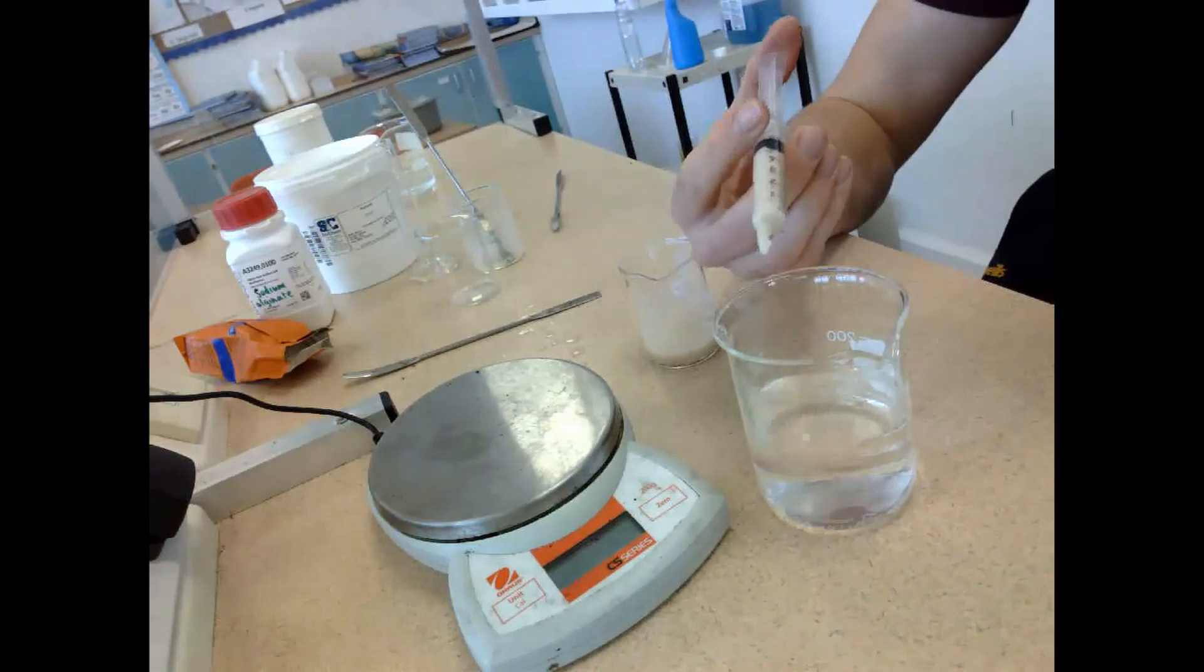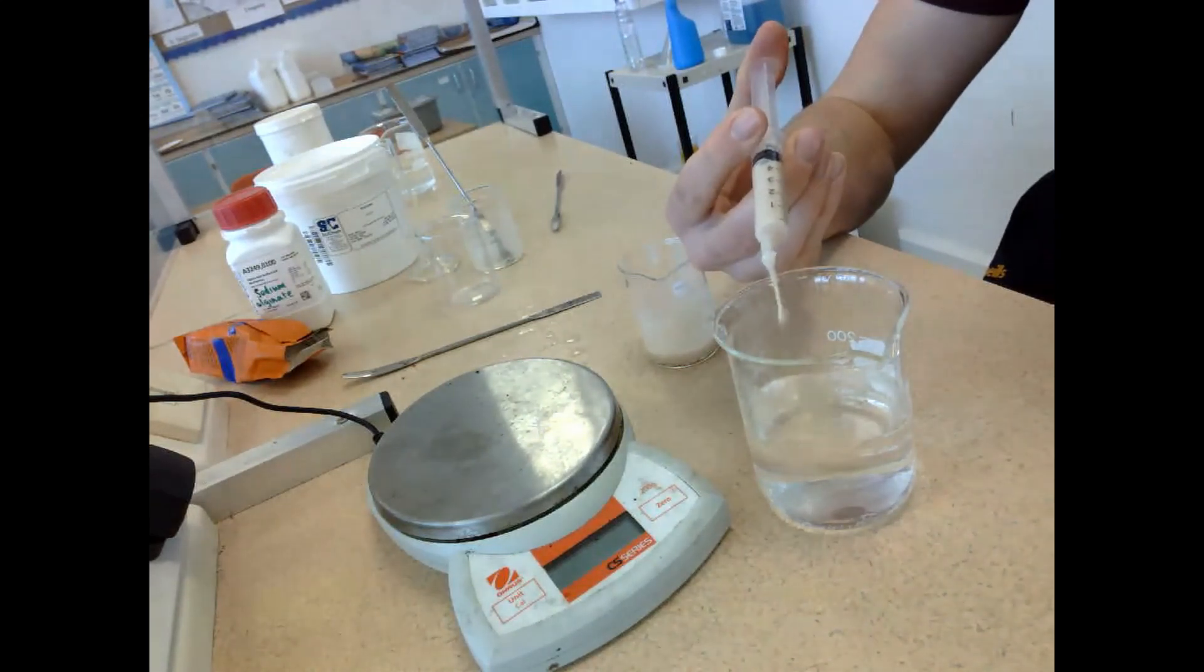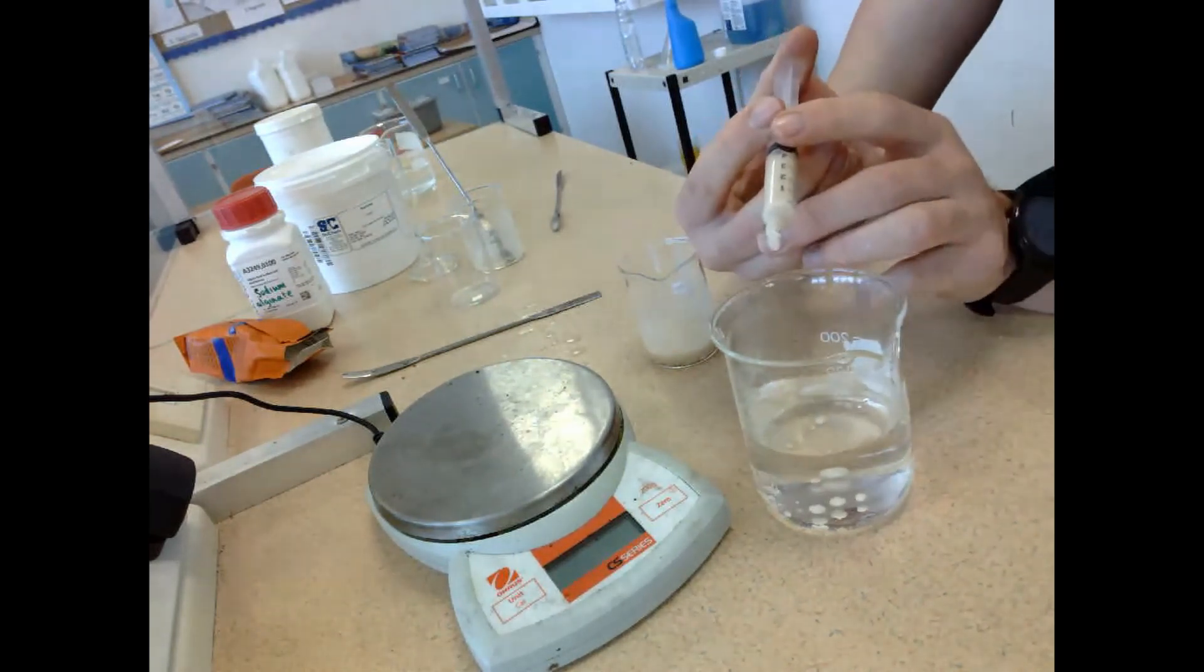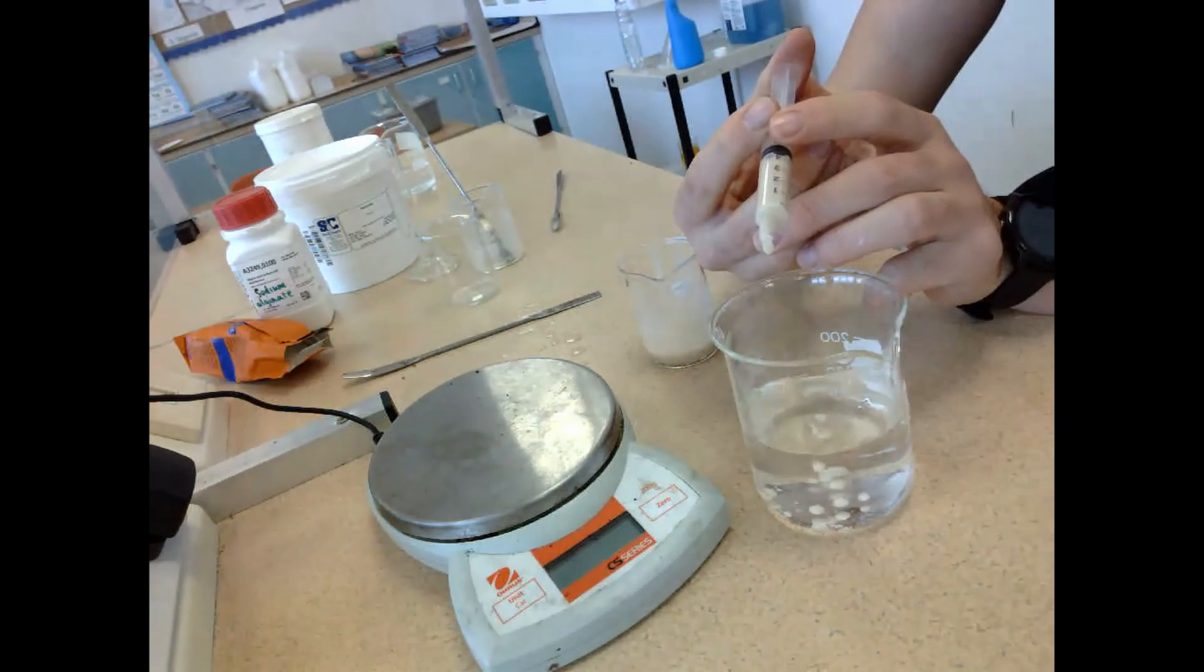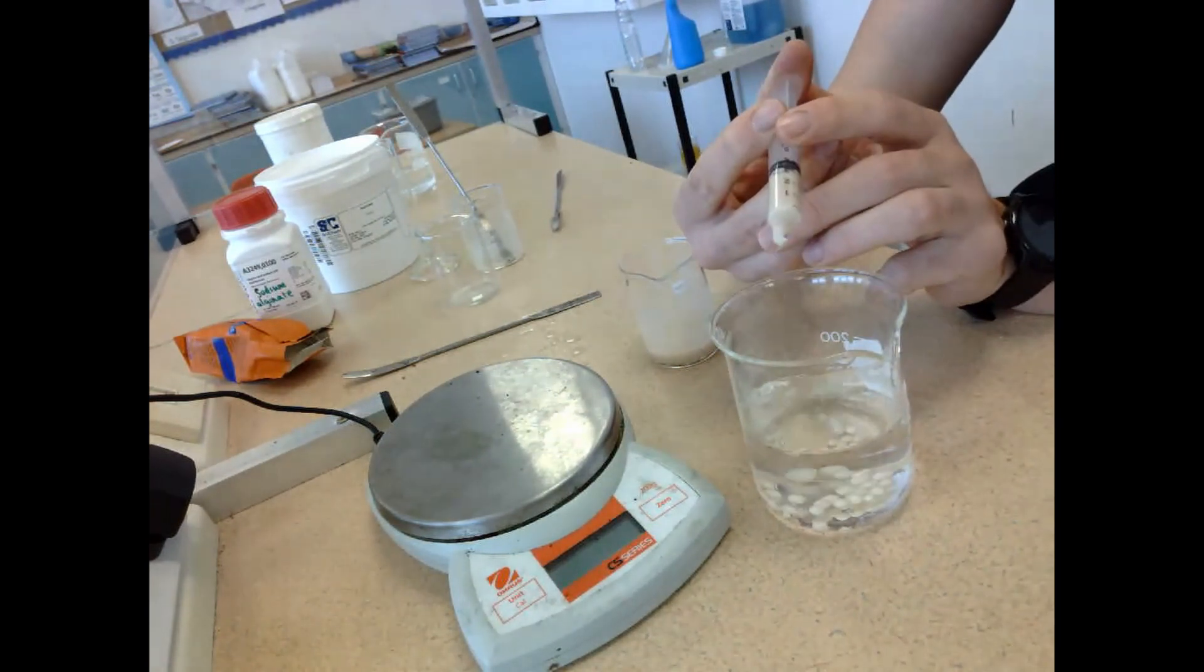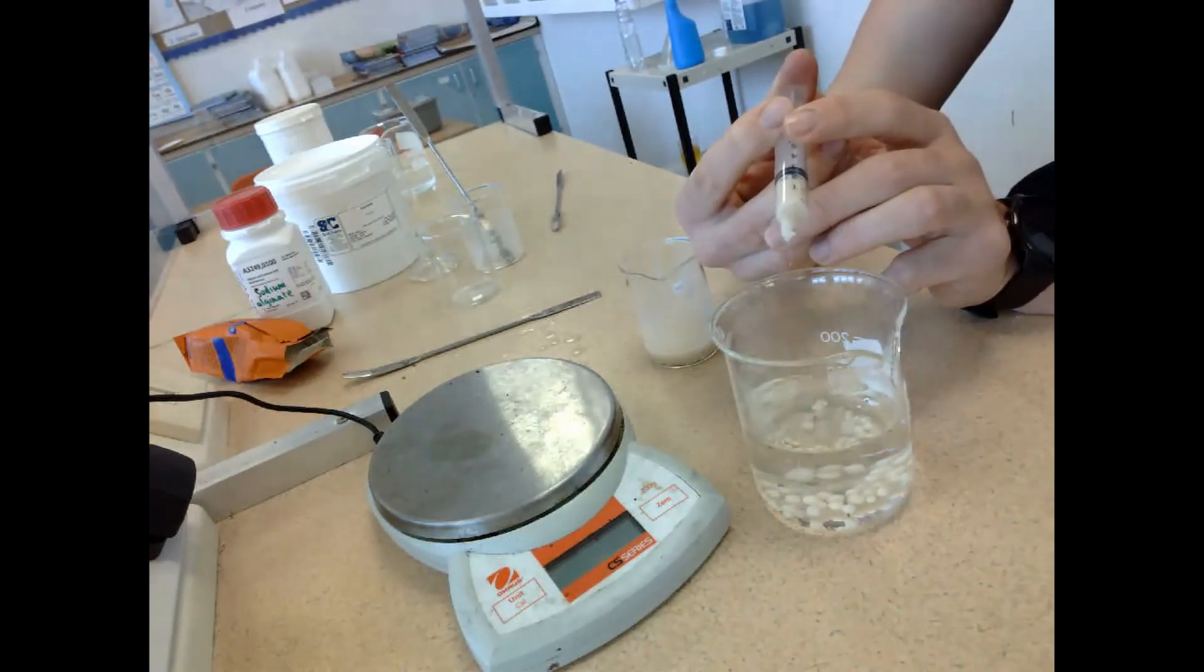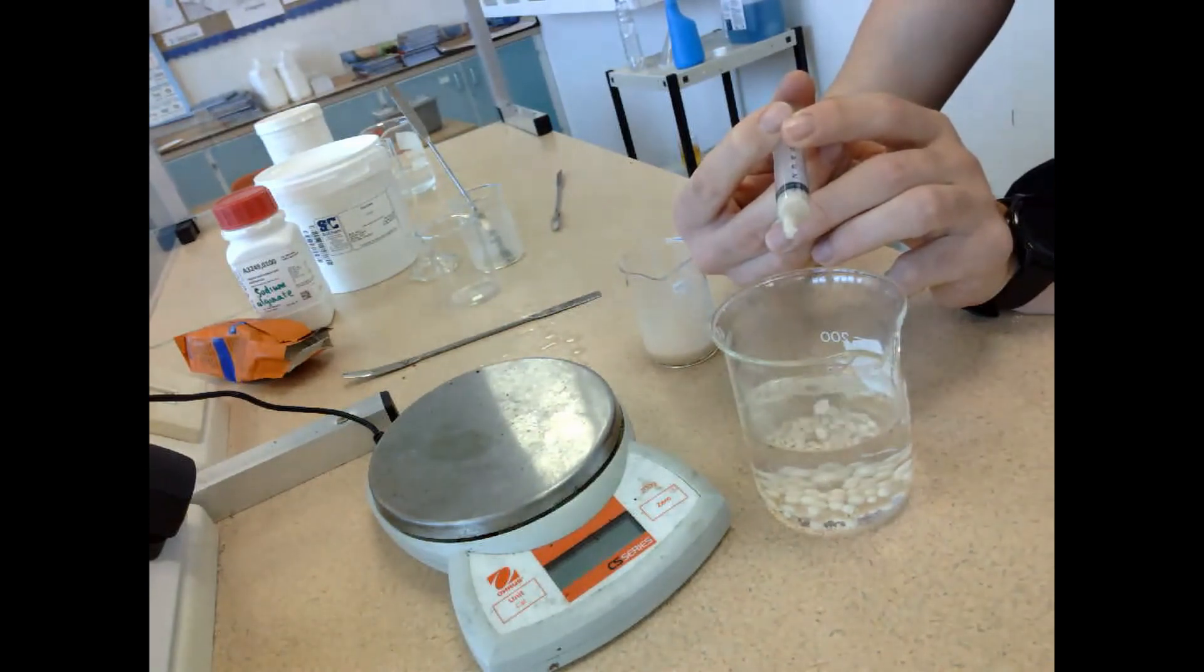I slowly begin to drop the contents of the syringe into the calcium chloride. I sped it up quite rapidly, but you can see those lovely little beads are forming. Each drop out of the syringe is hardening on impact with the calcium chloride. Once I finished adding in the yeast and sodium alginate solution, I just left those beads to harden for a full 15 minutes.